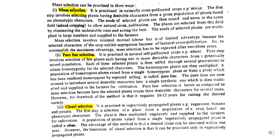The first kind is mass selection, which is practiced in cross-pollinated species. The first step involves selecting plants having desirable characters from a given population based on phenotypic characters. The seeds of selected plants are then mixed and sown in the same field — this is called mixed cropping — done to allow natural cross-pollination.